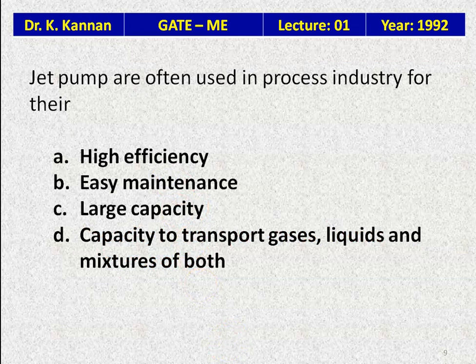Question 8: Jet pumps are often used in process industry for their — higher efficiency; easy maintenance; large capacity; or capacity to transport gases, liquids, and mixtures of both. The jet pump works on the jet principle: liquid from the outlet is brought back to a nozzle which creates a pressure drop, using that to pump water. The main advantage of jet pumps is their capacity to transport gases, liquids, and mixtures of both — that is the reason they are often used in the process industry.